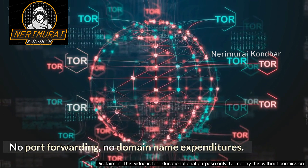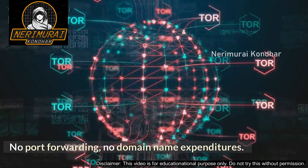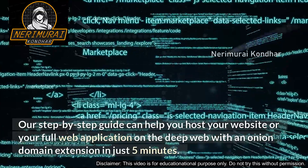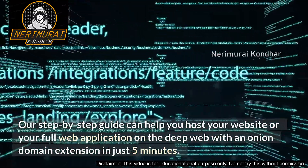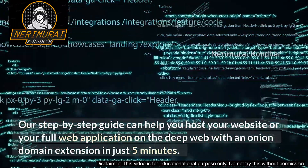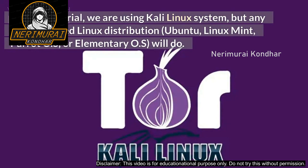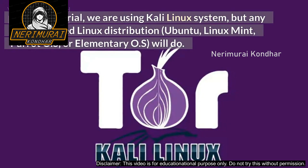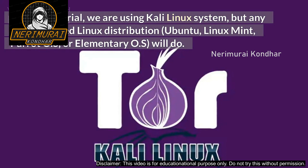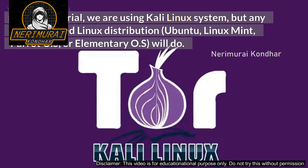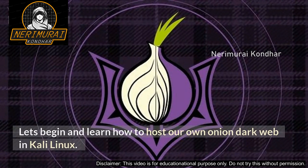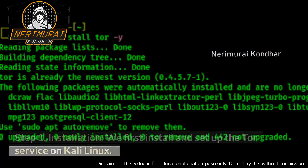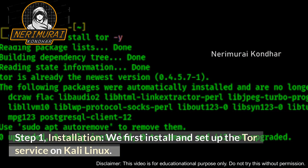Can we build our own websites on the dark web utilizing Kali Linux? The answer is clearly yes. No port forwarding, no domain name expenditures — our step-by-step guide can help you host your website or full web application on the deep web with an .onion domain extension in just five minutes. For this tutorial we are using Kali Linux, but any Debian-based Linux distribution — Ubuntu, Linux Mint, Parrot OS, or Elementary OS — will do.